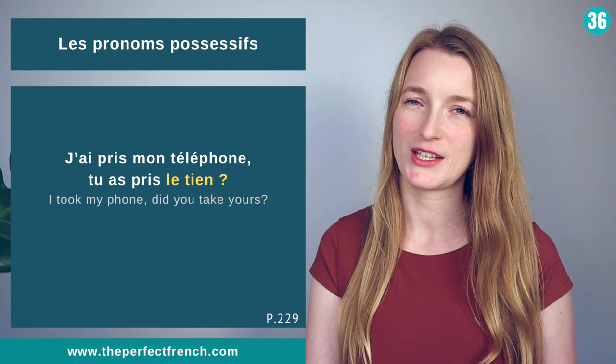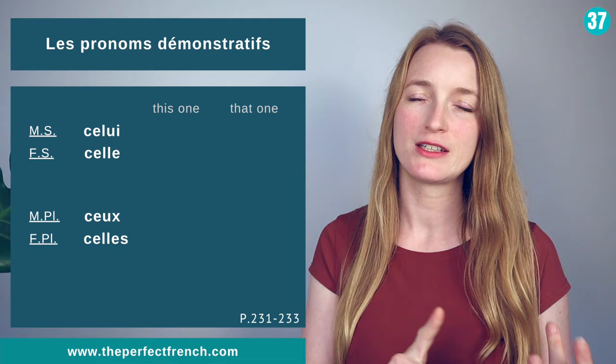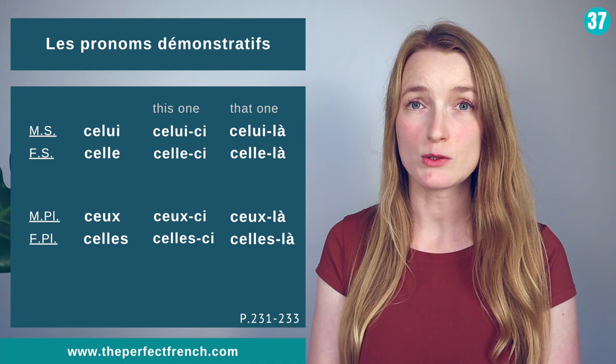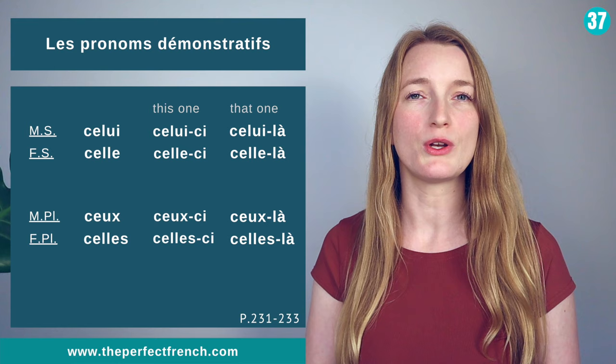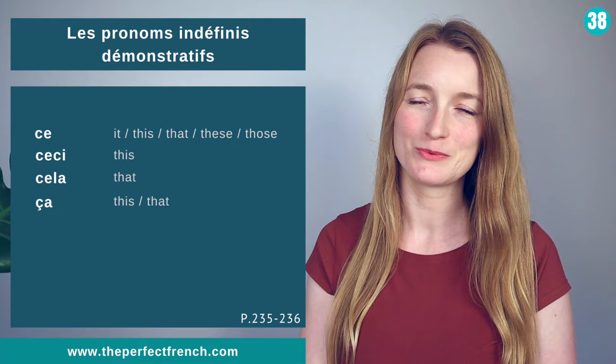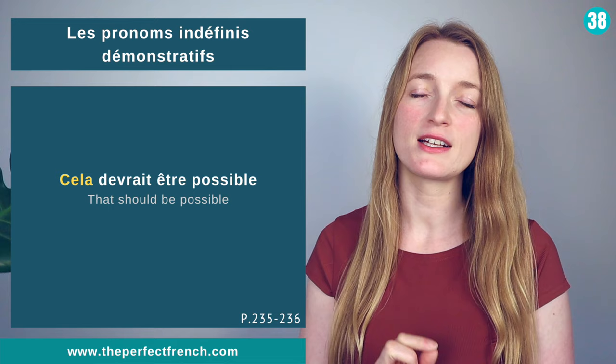Les pronoms démonstratifs: celui, celle, ceux, celles. To say this one add -ci: celui-ci, celle-ci, ceux-ci, celles-ci. To say that one add -là: celui-là, celle-là, ceux-là, celles-là. Lequel est-ce que tu veux? Celui-ci. Les pronoms indéfinis démonstratifs: ce, ceci, cela or ça — ça being the contraction. Cela devrait être possible.